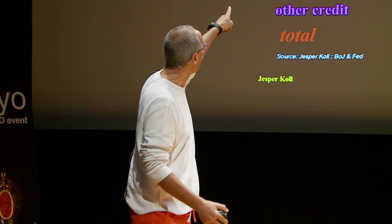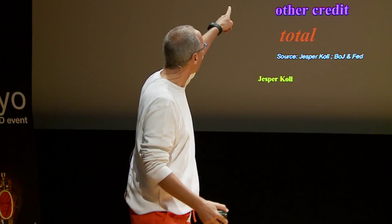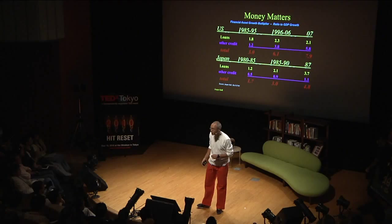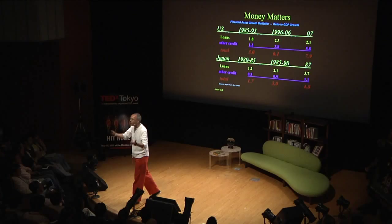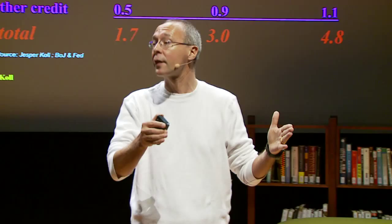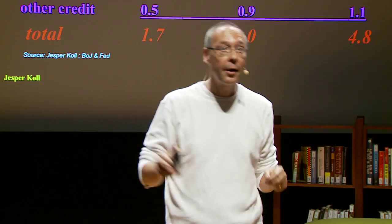In the United States, bank lending was not really the big growth driver — it was other credit, the shadow banking system: derivatives, securities, subprime mortgages, all this complex structured finance. So Japan was a very simple bubble economy — real estate, bank loans, that was it. America was very complicated: shadow banking, a lot of structured finance. Japan was a Zen bubble; America was a complicated Hollywood bubble, much more complicated to sort out.